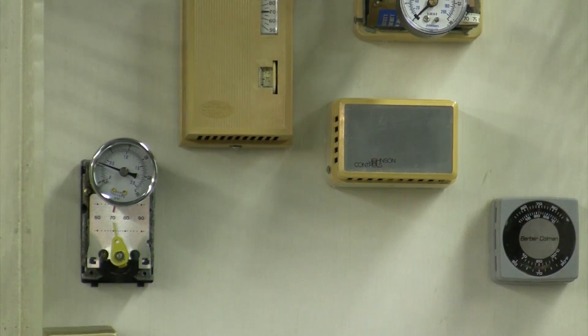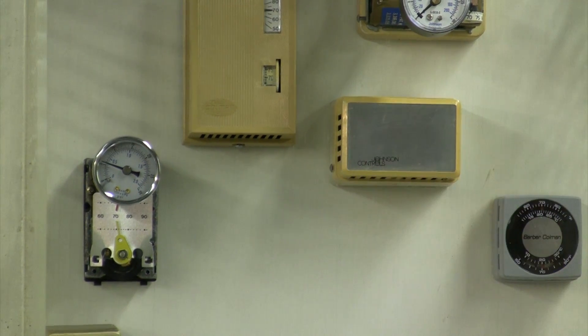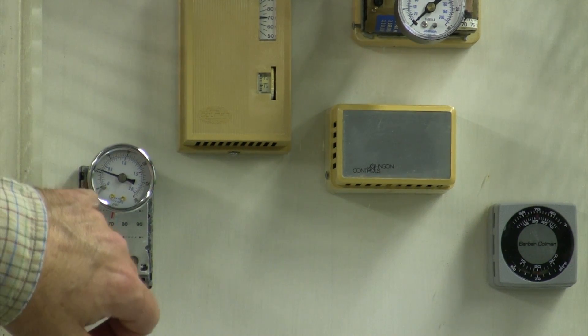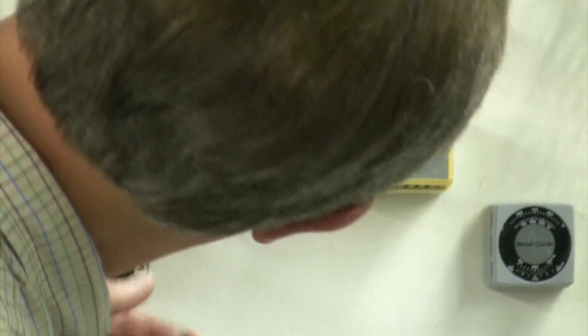Alright, now in each case I'm gonna look for about a ten and a half pound branch pressure. Let's start with the Honeywell first. I've got my branch gauge right here, and it is reading just a little over five pounds.